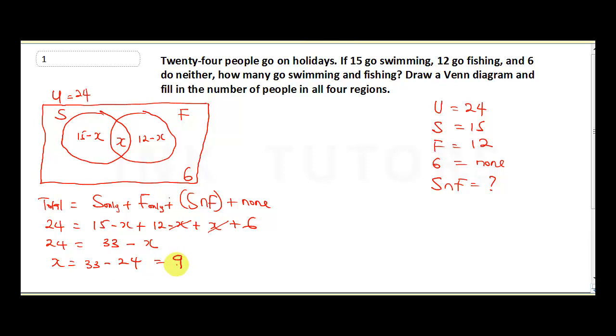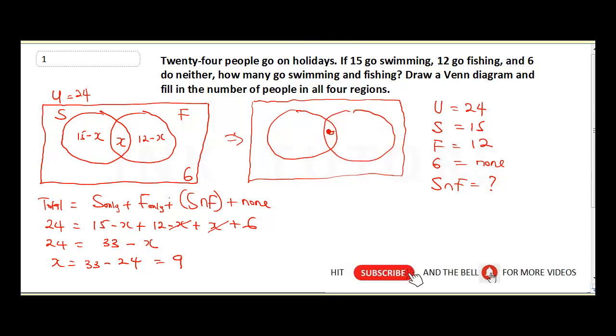So from here, we can ascertain that the number of people who go for both swimming and fishing is nine. So now the question says, draw a Venn diagram to fill in the number of people in all four regions. So my real Venn diagram, it's now going to be when I take out my X and represent it fully. So I'll draw my circle back again. So this is going to be nine. 15 minus nine is now going to be six. 12 minus nine will now be three. These are the actual number of people. So this will be six.